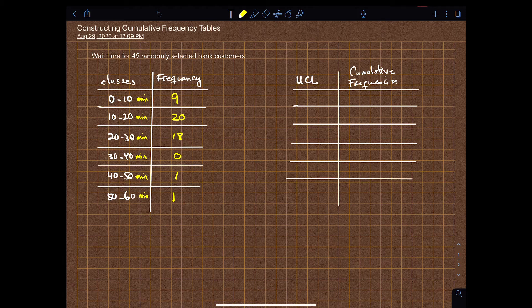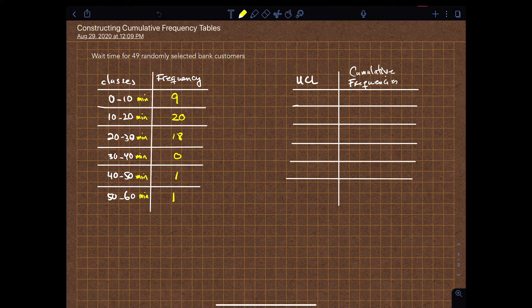Constructing cumulative frequency tables when given a grouped frequency table. Here you'll see an example where I have 49 randomly selected bank customers and their wait times on how long it took for them to process their transactions. This is an example from our lecture notes, and given a frequency table, the question is how do you construct the cumulative frequency table?